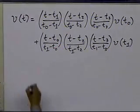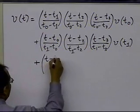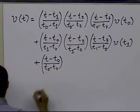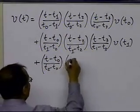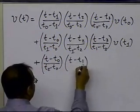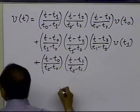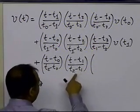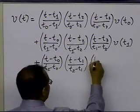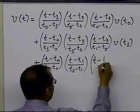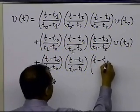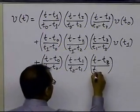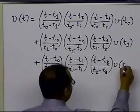Similarly, we will have L2(t), so it will be (t minus t0) divided by (t2 minus t0), times (t minus t1) divided by (t2 minus t1), and then we're going to skip the 2 again, because it will become 0 otherwise. So it's (t minus t3) divided by (t2 minus t3), times the value of the velocity at t2.